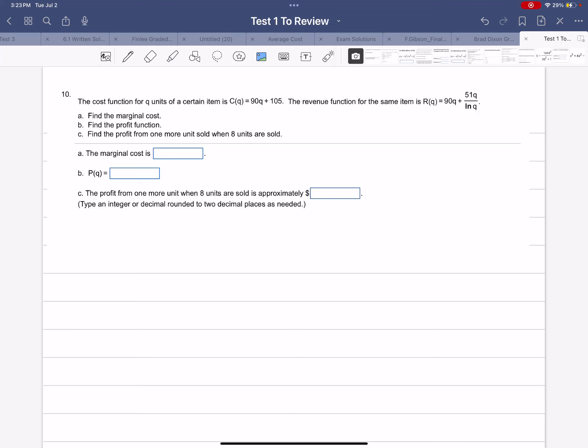The cost function for Q units of a certain item is C(Q) = 90Q + 105. The revenue function for the same item is R(Q) = 90Q + 51Q divided by ln(Q).